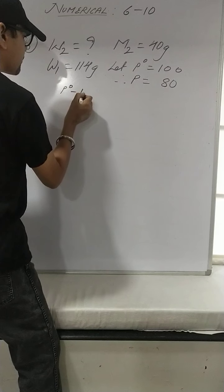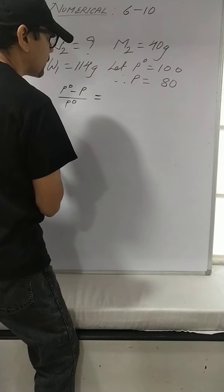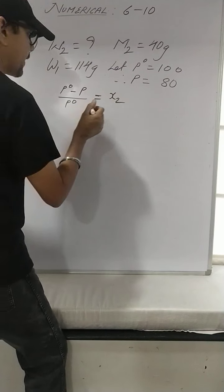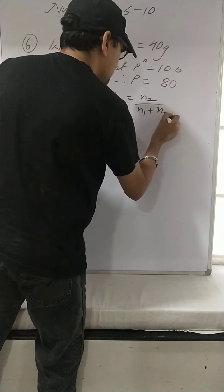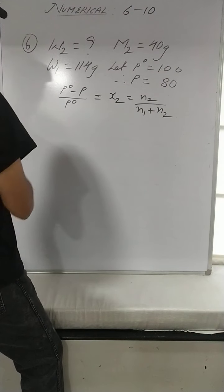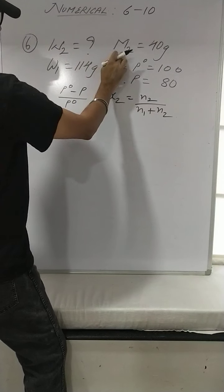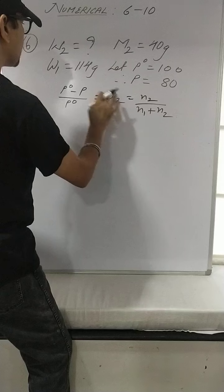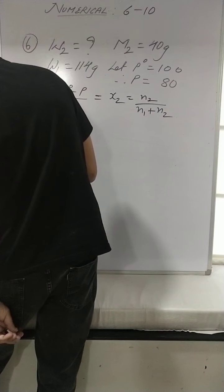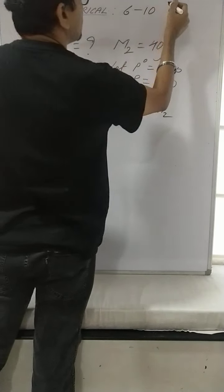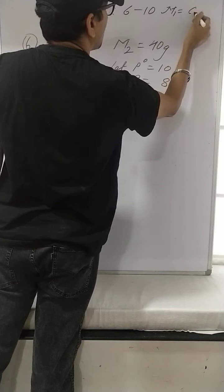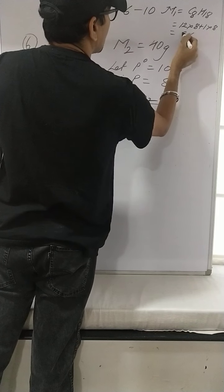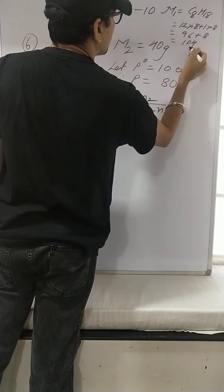The formula everyone knows: P0 minus P upon P0 is equal to mole fraction of solute. The weight of the solute is very high, so mole fraction X2 = N2 / (N1 + N2). Now we know W2, find out M2. M1 is octane — formula C8H18. Molar mass = 12×8 + 1×18 = 96 + 8 = 104 grams. So M1 = 104.